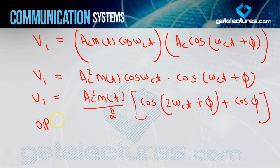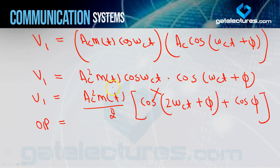Now if I consider the low pass filter output: the filter passes up to FM. The term containing 2FC + FM and 2FC − FM will be rejected. The term cos(φ) is a constant value — φ could be 30°, 20°, 10° — so cos(φ) is always constant, having zero frequency. Therefore the output becomes (AC²/2)·m(t)·cos(φ).